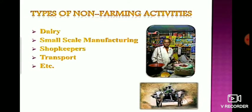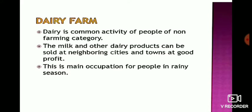The types of non-farming activities include dairy, small-scale manufacturing, shopkeeping, and transport. Dairy is a common activity for people in the non-farming category. Milk and other dairy products can be sold at neighboring cities and towns for a good profit, and this is the main occupation for people in the rainy season.